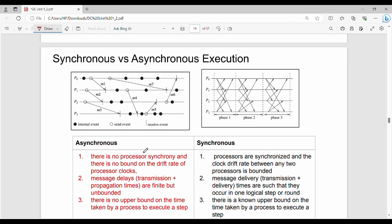First, asynchronous execution. In asynchronous, there is no processor synchrony and there is no bound on the drift rate of the processor clock. What we say is that there is no synchronization in the processor and there is no limit on the drift rate of the processor clock. That's point number one.